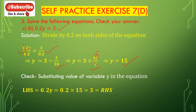Now we check y = 15. Substituting y = 15 on the left hand side of the equation, we get 0.2 multiplied with 15 = 3, which is equal to the right hand side. So left hand side is equal to right hand side and the equation is satisfied with y = 15. The value for the variable y is 15.